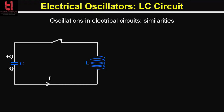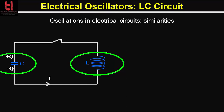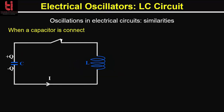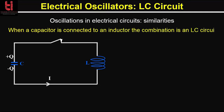This figure shows an electrical oscillator consisting of an inductor L and a capacitor C connected in series. So when a capacitor is connected to an inductor the combination is an LC circuit. As I have explained in the previous lecture we start with an idealized situation, that means we consider that the resistance in the circuit is zero. If you think about the mechanical system, this is analogous to the assumption that there is no frictional force present in the mechanical system.